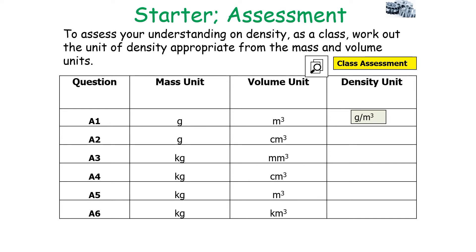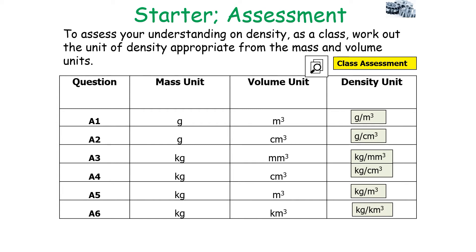If the units of mass are in grams and volume is centimetres cubed, density is grams per centimetre cubed. If mass is kilograms and volume is millimetres cubed, density would be kilograms per millimetre cubed. If mass is in kilograms and volume is in centimetres cubed, it gives kilograms per centimetre cubed. If mass is in kilograms and volume is in metres cubed, density is kilograms per metre cubed. And if mass is in kilograms and volume is in kilometres cubed, density is kilograms per kilometre cubed.